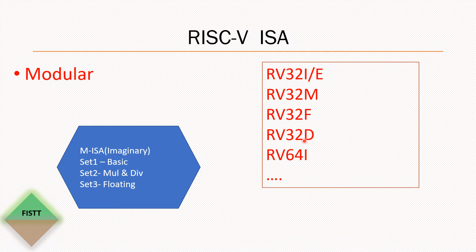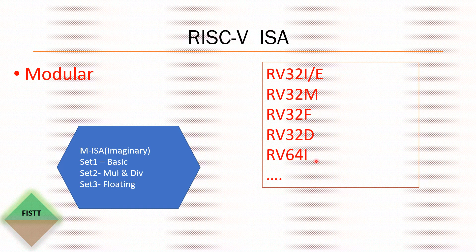'D' stands for double precision floating point instructions. For example, RV64I means a 64-bit address width with the integer extension. The 'I' extension is the basic instruction set that every RISC-V core must implement to be compatible with RISC-V, while the additional or optional extensions can be implemented based on your needs. For example, if a core declares its ISA as RV32IMD, that means the core supports integer, multiplication and division, and double precision floating point instructions.